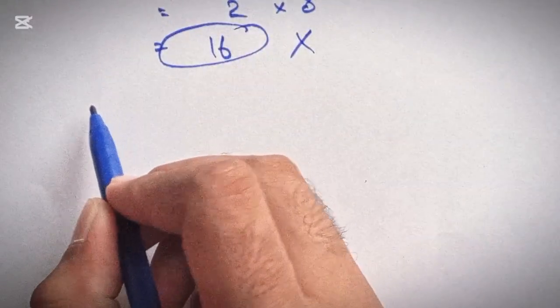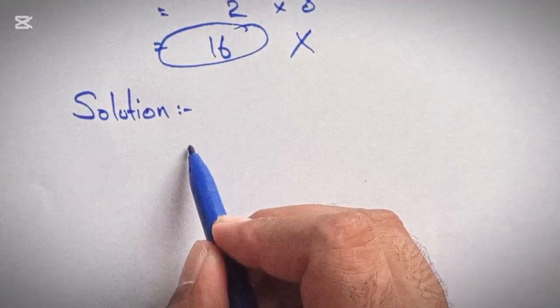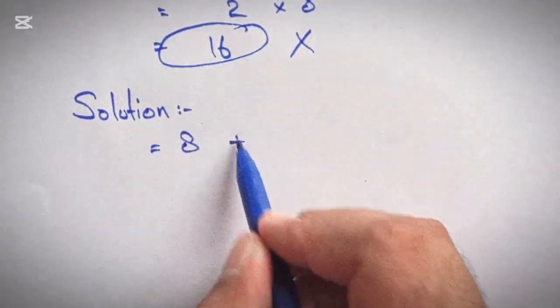Now the correct solution will be as follows. Rewrite the question: 8 divided by 2 minus 2 times 8.